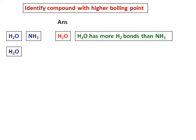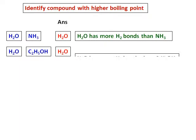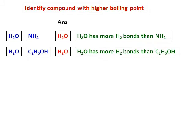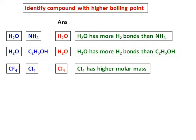Then we have water and ethyl alcohol, C2H5OH. Both can form hydrogen bonding, but water has a higher boiling point because the number of hydrogen bonds in water is much larger compared to C2H5OH. Then let us compare CF4, carbon tetrafluoride, and CI4, carbon tetraiodide. In this case, because CI4 has a higher molar mass, it will have a higher boiling point.